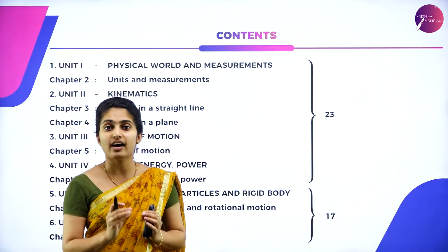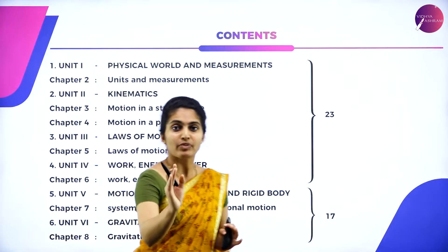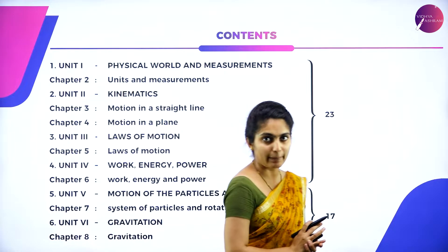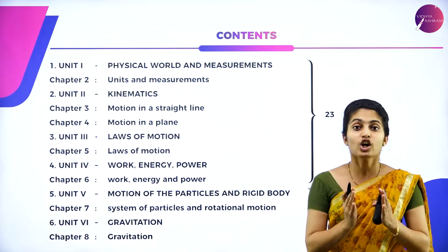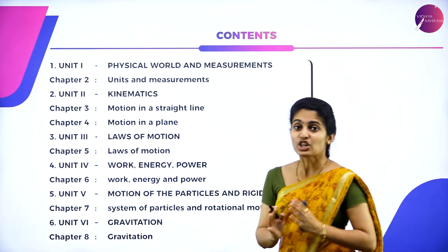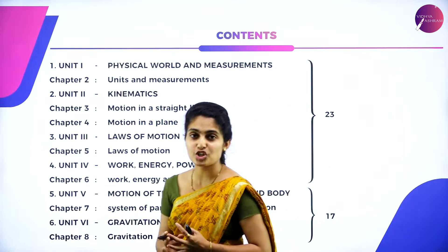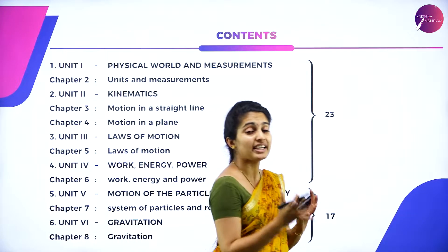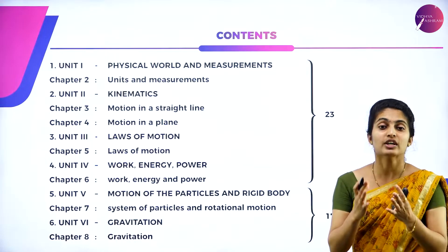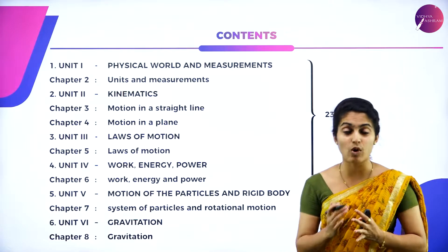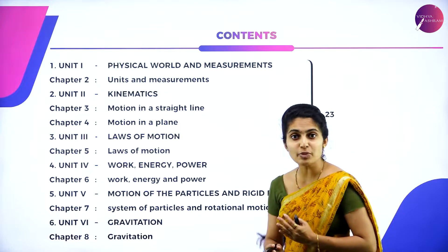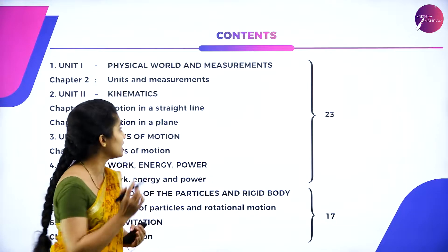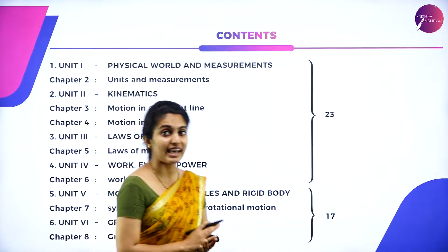For Class 11, it is the NCERT textbook that you use. Unit 1 is Physical World and Measurement, wherein you will deal with units, measurements, physical world — how physics came into existence, what is meant by science, what are the discoveries, inventions, and measurement systems such as SI units, CGS units, and MKS system, as well as dimensions.